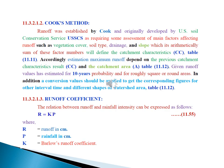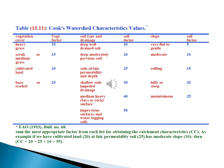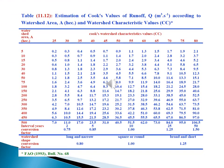Really, runoff was established by Cook and originally developed by U.S. Soil Conservation Service as requiring some assessment of main factors affecting runoff, such as vegetation cover, soil type, drainage, and slope, which is a summation of these factors as shown in the enclosed table. Moreover, runoff coefficient is the relation between runoff and rainfall intensity and can be expressed as shown in the enclosed equation. Table showing Cook's watershed characteristic values. Table showing the estimation of Cook's values of runoff according to watershed area and watershed characteristic values.